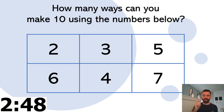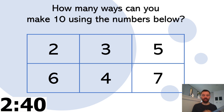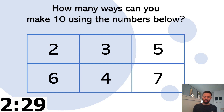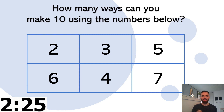For example, 7 add 3 is 10 — that's one way of doing it. Is there another way? Six add four — this is what we call number bonds to 10, isn't it? Six add four, seven add three. Is there another one?